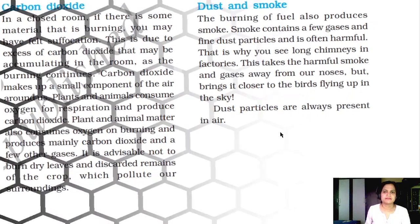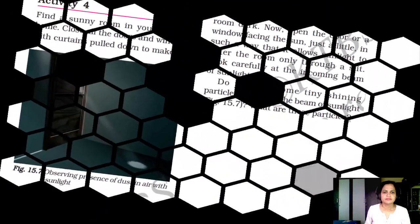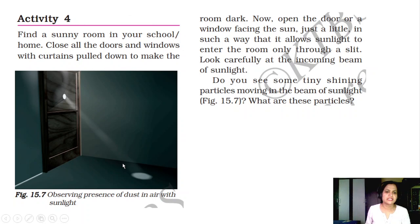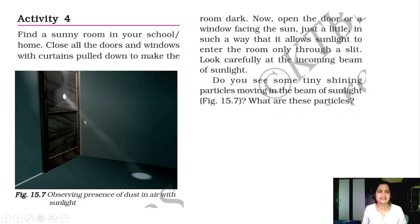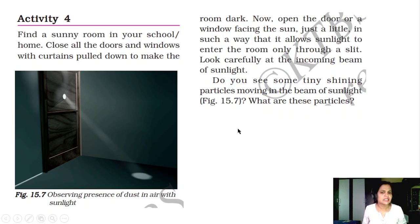Dust particles are always present in the air. Here is an experiment for observing dust particles. On a sunny day, find a sunny room in your school or home. Close all the doors and windows with curtains to make the room dark. Now open the door or use a torch at night. Switch on the torch and observe — in that torchlight you will see dust. Or, open a window facing the sun just a little so sunlight enters through a slit. Look carefully at the incoming beam of sunlight. Do you see tiny shining particles moving in the beam? These particles are dust.